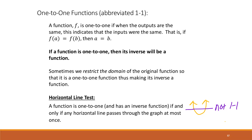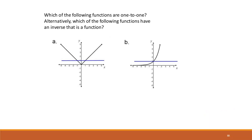Looking at these examples: the first graph doesn't pass the horizontal line test, so it can only have an inverse relation, not an inverse function. But graph B passes the horizontal line test, so it indeed has an inverse function.